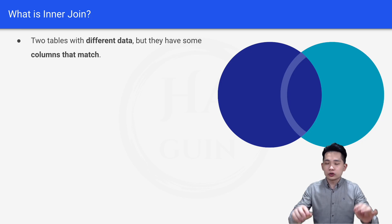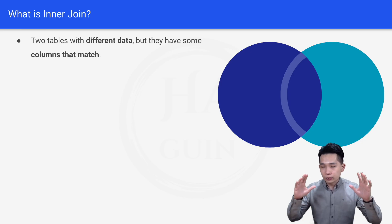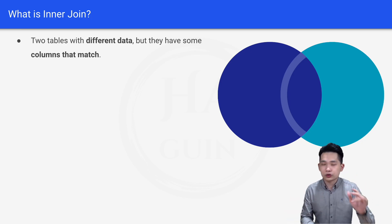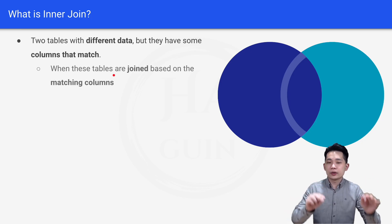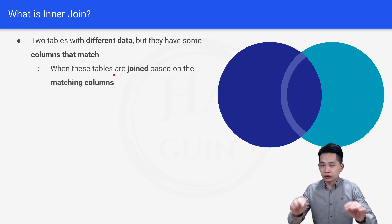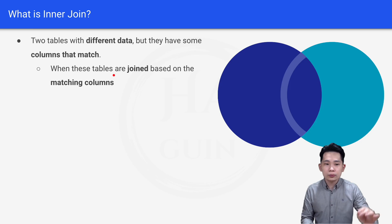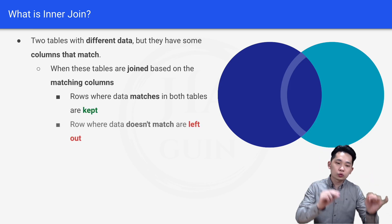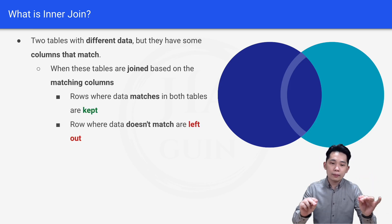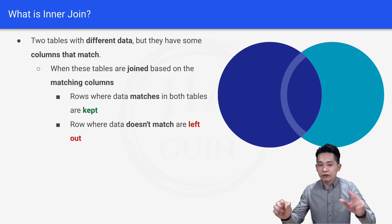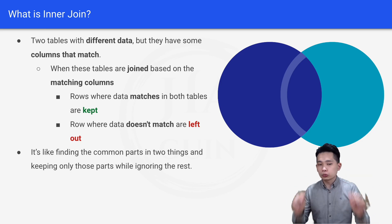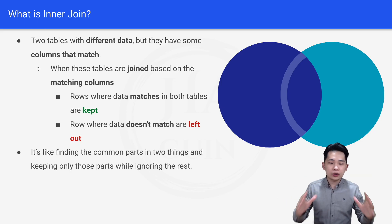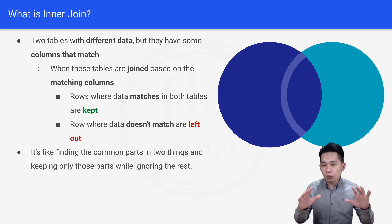For inner join, we normally have two tables with different data but they have some columns that match. When these tables are joined based on the matching columns, the rows where data matches in both tables are kept, whereas rows where data doesn't match are left off — like finding the common parts in two things and keeping only those parts while ignoring the rest.